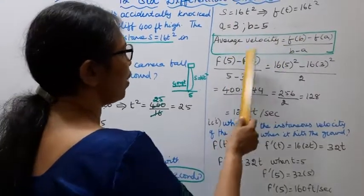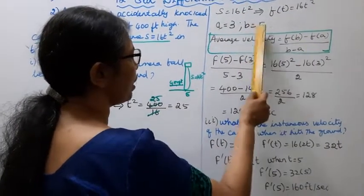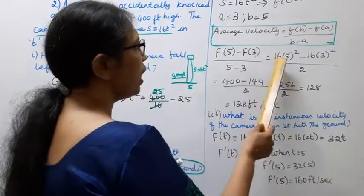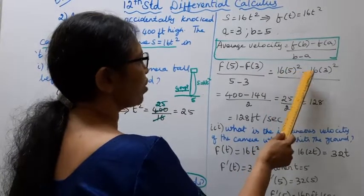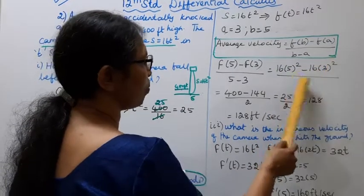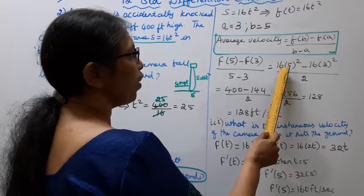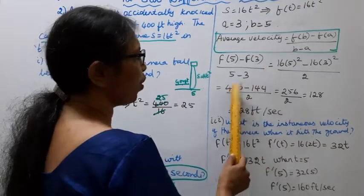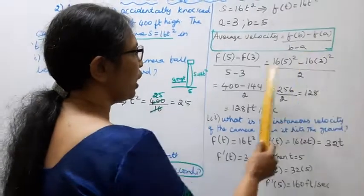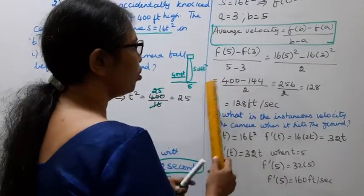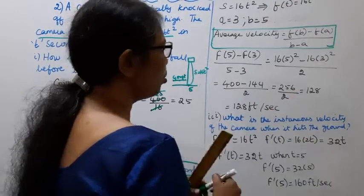So we compute f(5) minus f(3) divided by 5 minus 3. f(5) equals 16 times 25 equals 400. f(3) equals 16 times 9 equals 144. That gives us 400 minus 144 divided by 2, which is 256 divided by 2.